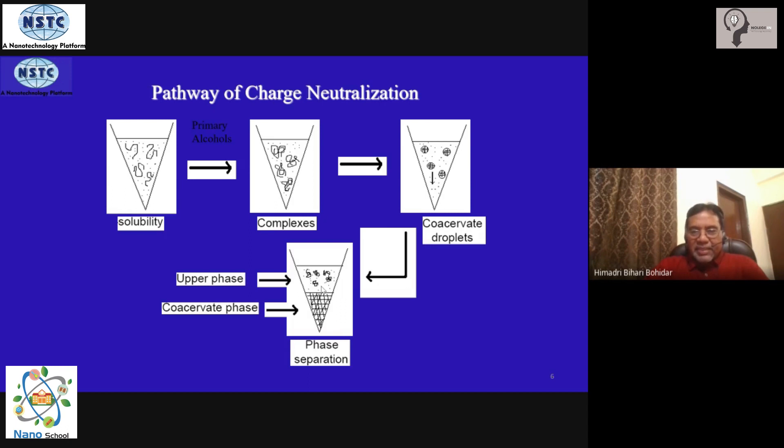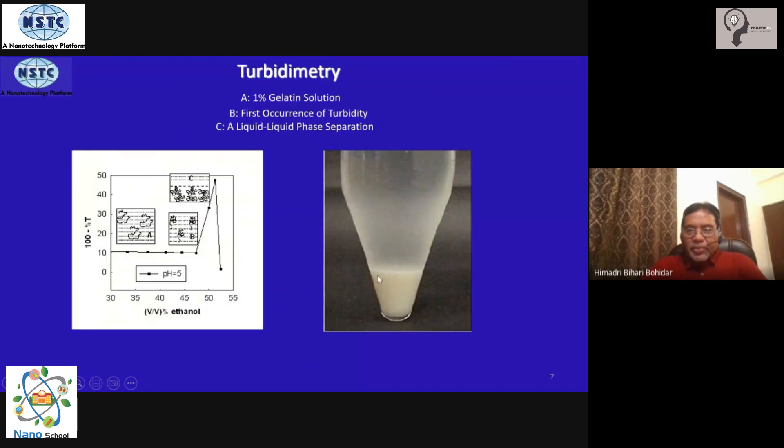Or if you don't have that facility, you can send it to very slow heating in an oven at 40 degrees or so. Let it dry up over 48 hours or so. Don't keep the temperature high, that will create disturbance in the structure because they are all biomolecules. But if at 40 degrees Celsius left over 48 hours, it will dry into a powder. But the best is to do a lyophilization experiment.